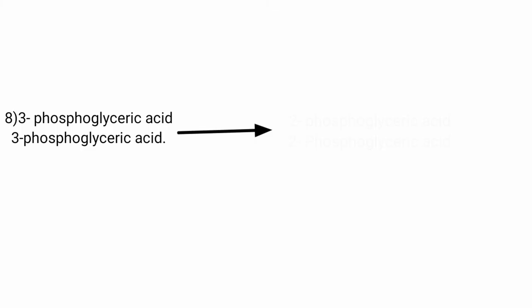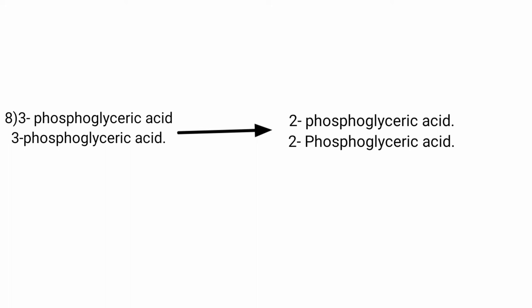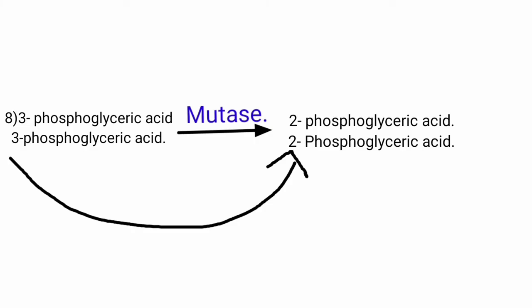In step 8, 2 molecules of 3-phosphoglyceric acid are isomerized to 2 molecules of 2-phosphoglyceric acid. The enzyme used is mutase. Only the phosphate group changes position — from the 3rd carbon to the 2nd carbon.